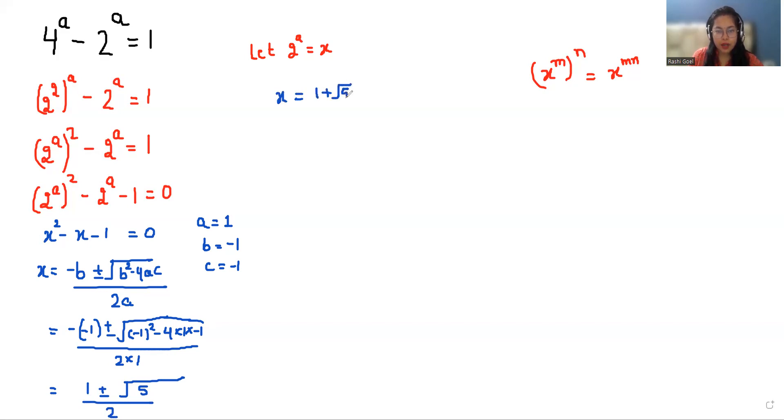So we have two values of x: (1 + √5)/2 and (1 - √5)/2. As we can see, x is in terms of 2^a.